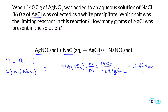Now if we have 0.824 moles of silver nitrate, then how much product do we expect to form based on the mole ratio of the chemical equation? The ratio is one mole to one mole to one mole. You can pause the video for a moment and try to determine how much silver chloride would be formed if silver nitrate was the limiting reactant.